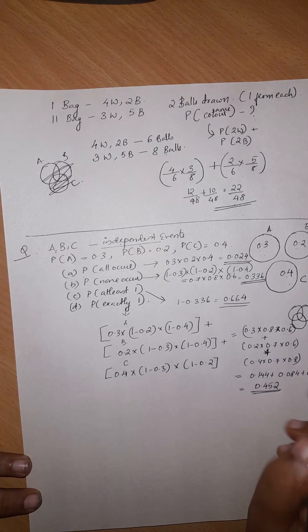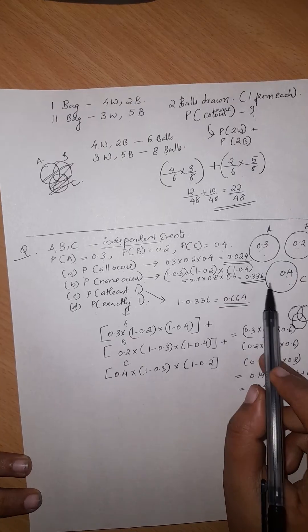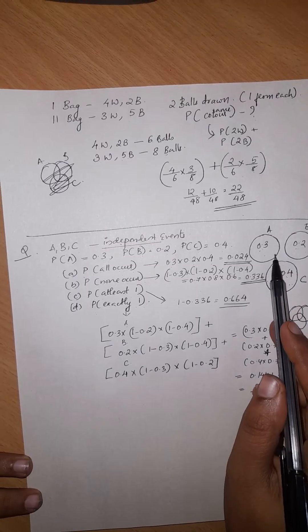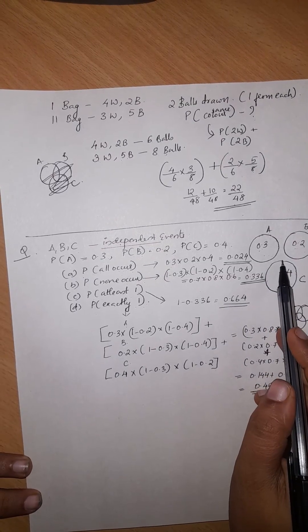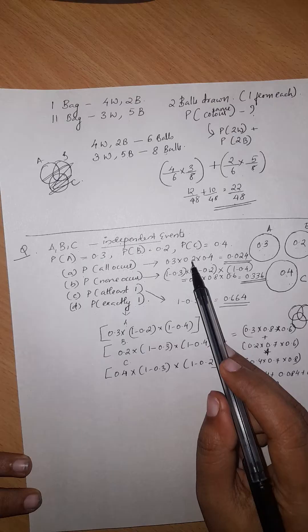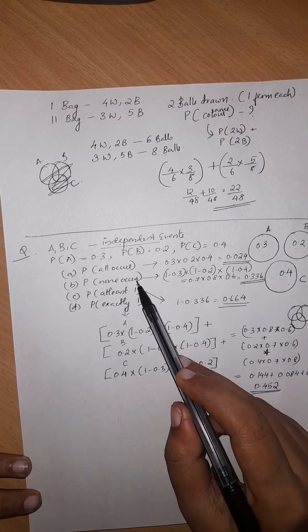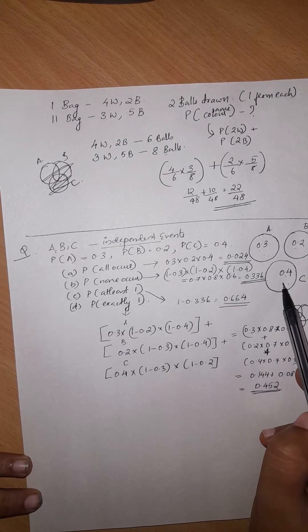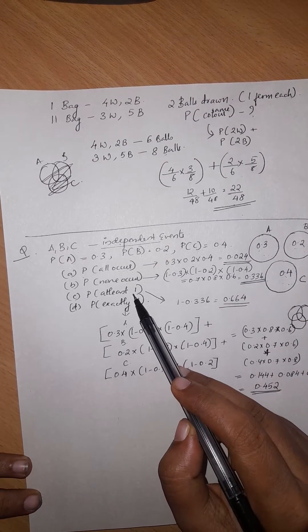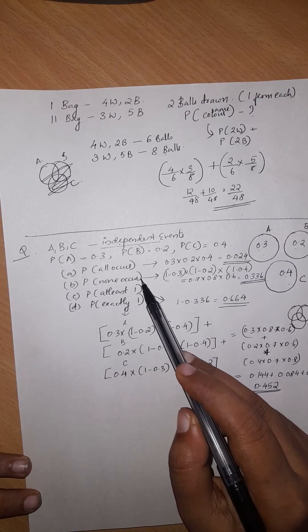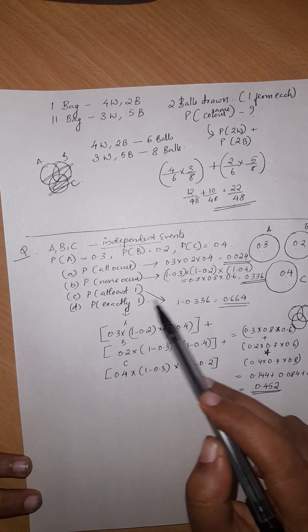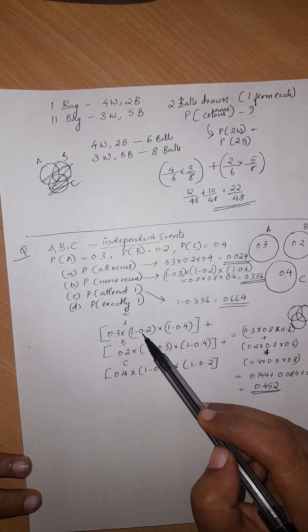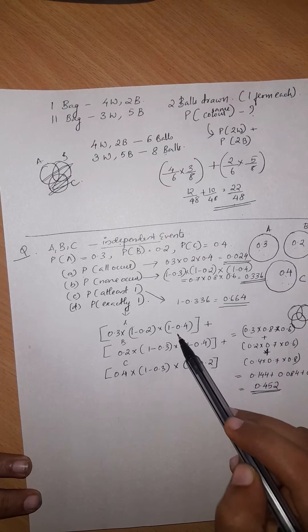This case is independent: 0.3 into 0.2 into 0.4. So, this case is 0.8, it is equal to 0.024. So, 1 minus 0.3, 1 minus 0.2, 1 minus 0.4.